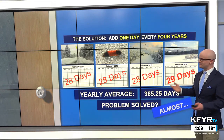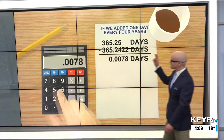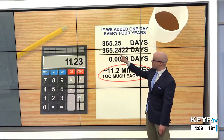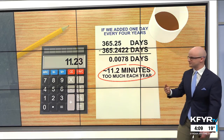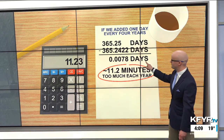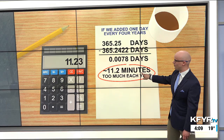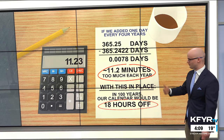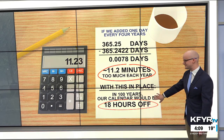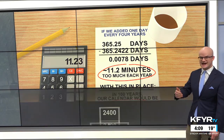So the problem's solved, right? Well, not exactly, because you take that 365.2422 days that it takes for the Earth to revolve around the sun — we're short. We have a little bit extra here. So that's 11.2 minutes too much each year by doing leap year every four years. So with this in place, in 100 years our calendar would still be 18 hours off.